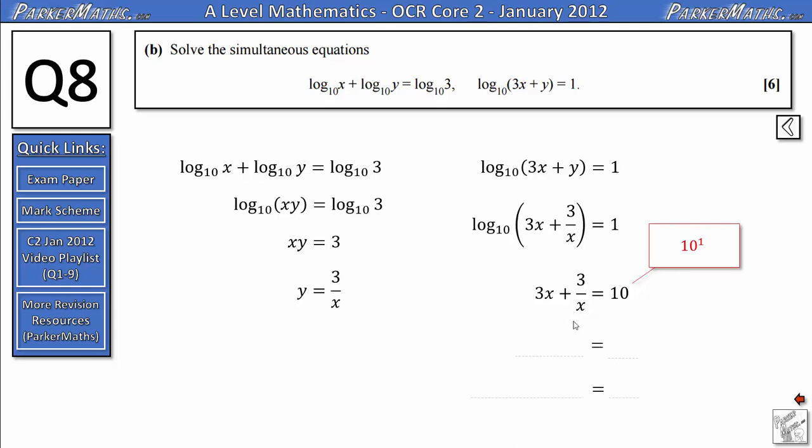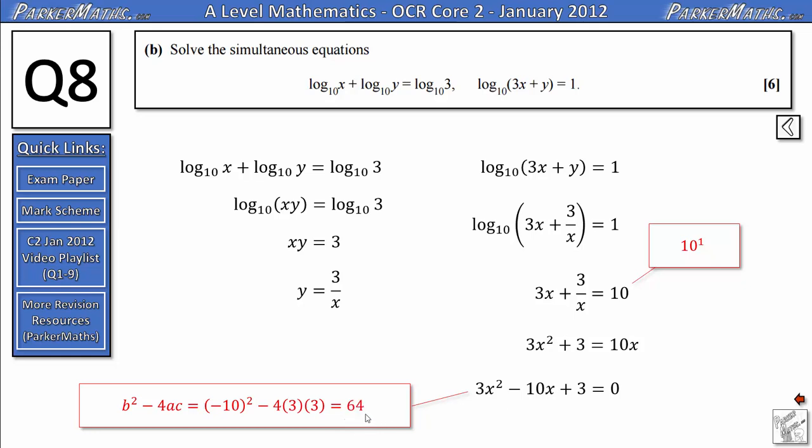From here we've just got a basic equation to solve. I'm going to start by multiplying everything by x. That gives me 3x² + 3 on this side, and 10x on the other side. Subtracting 10x from both sides gives me 3x² - 10x + 3 = 0. Now I've got to solve this, but the first thing I'm going to do is check the discriminant. So I'm going to do b² - 4ac. b is -10, so I've got (-10)² minus 4 times 3 times 3. And if I do that, I get 64. Because 64 is a square number, that tells me this quadratic will probably factorize quite nicely.